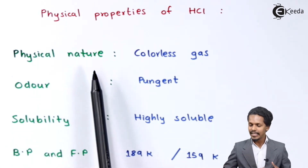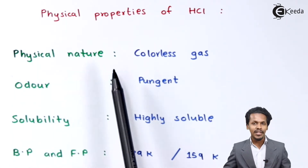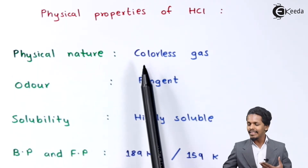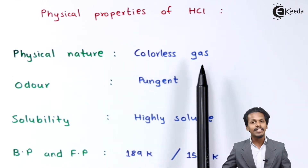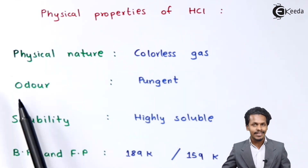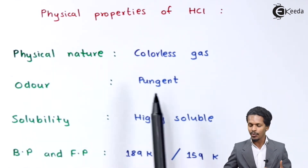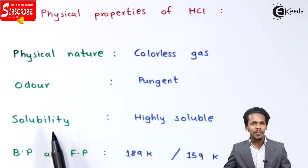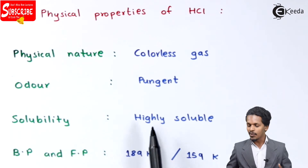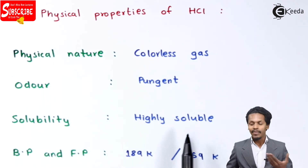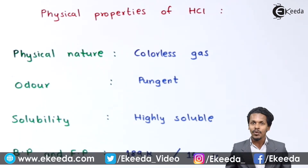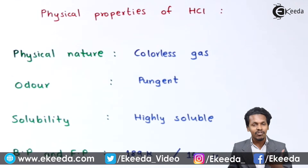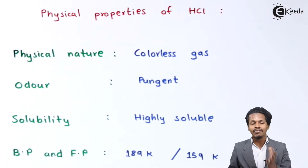Starting with the first point — the physical nature — HCl is basically a colorless gas. Talking about the odor, it has a pungent smell. Talking about solubility, it is very much soluble in water because it forms hydrogen bonding, and that's the reason it is very soluble in water.